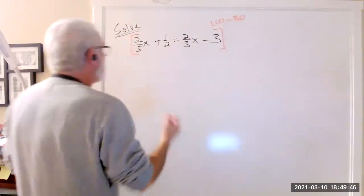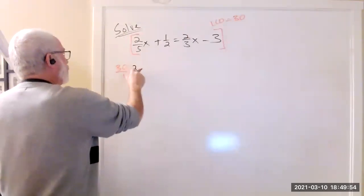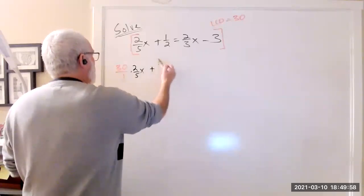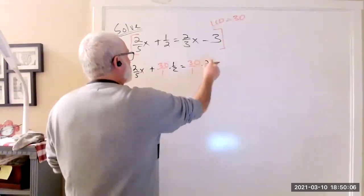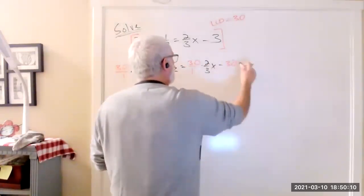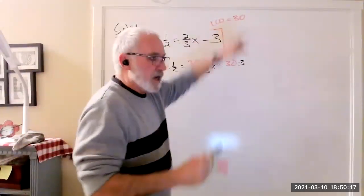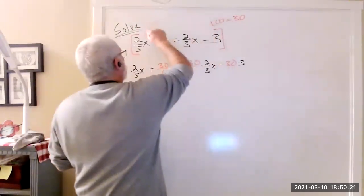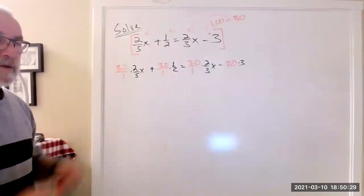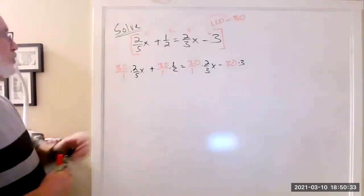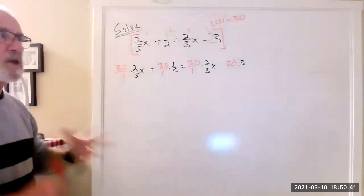Mentally, you're doing 30 over 1 times 2 over 5x, plus 30 over 1 times 1 half, equals 30 over 1 times 2 thirds x, minus 30 times 3. When you write the LCD up here, you're telling everyone that you're going to distribute the LCD to every piece of that problem. If you haven't made any mistakes, when you reduce this, there should be no more fractions.